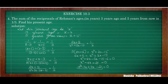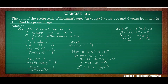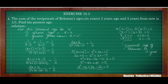Taking common terms: x times x minus seven plus three times x minus seven equals zero. So the factors are x minus seven and x plus three. Equating to zero separately: x equals seven or x equals minus three. Since age cannot be negative, x equals seven. Therefore the present age of Rahman is seven years.